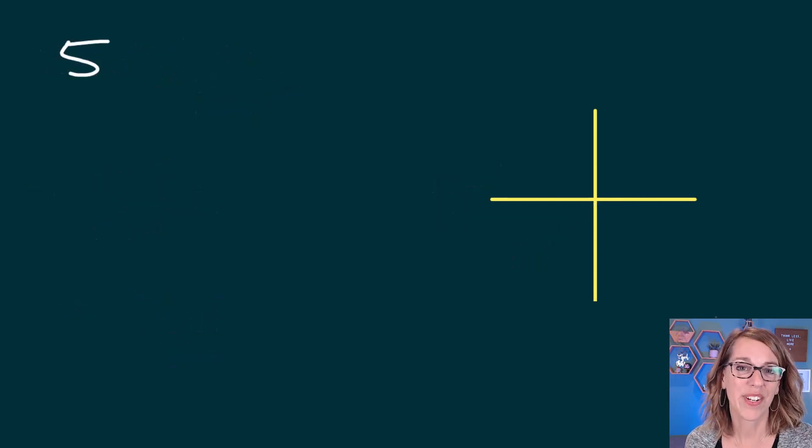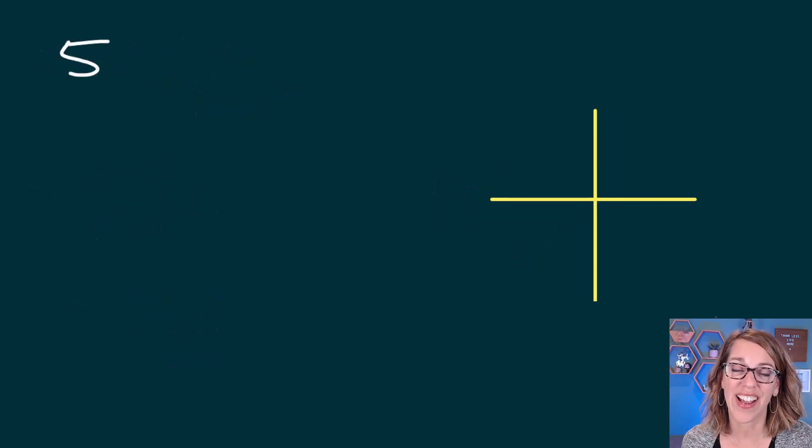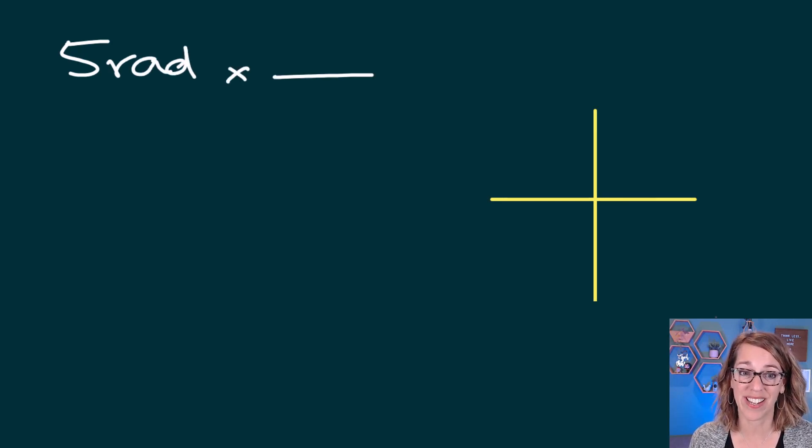Here comes another one. Now I want to convert the angle measure five. Which conversion factor would you choose? The key here is that there's no degree symbol. That means that this five is actually five radians. So I want to cancel my radians, and I want to end up in degrees.